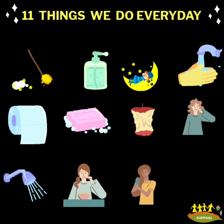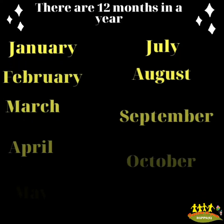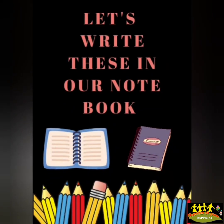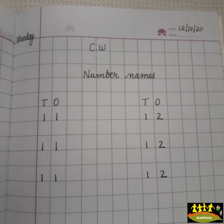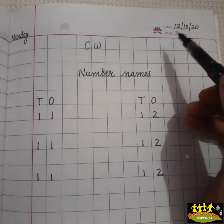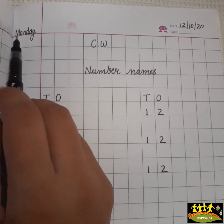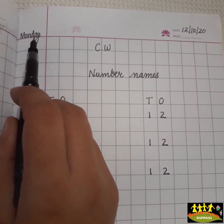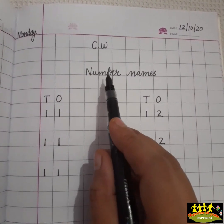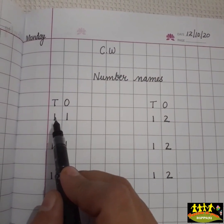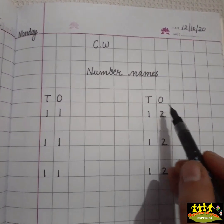Another example of 11 is 11 things we do every day, and there are 12 months in a year. Children, now let's write these in our notebook. Today is 12th of October 2020 and today is Monday. Number names — once.